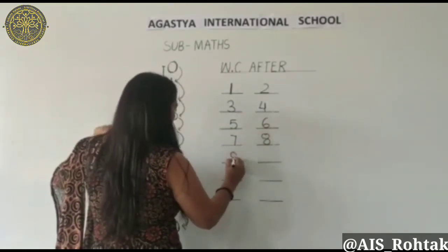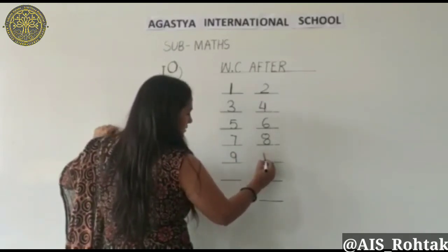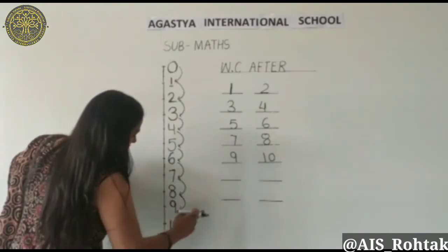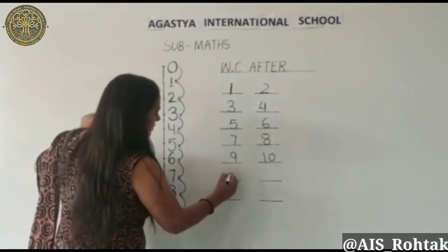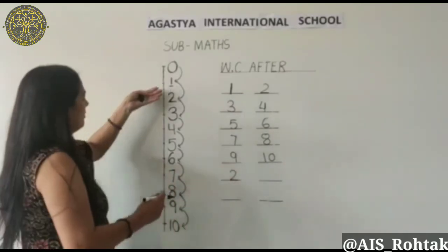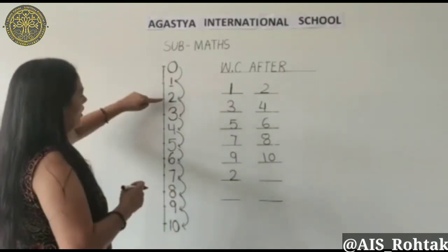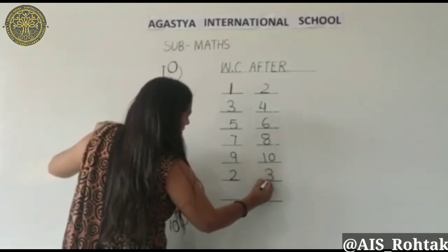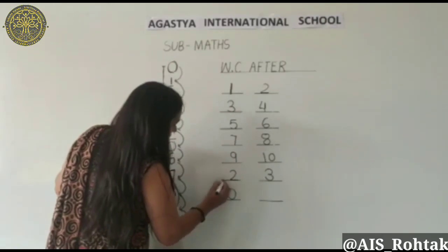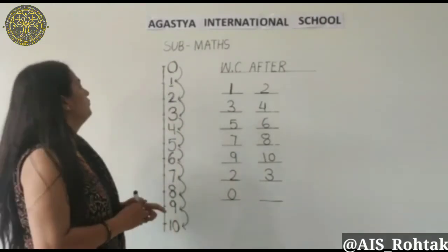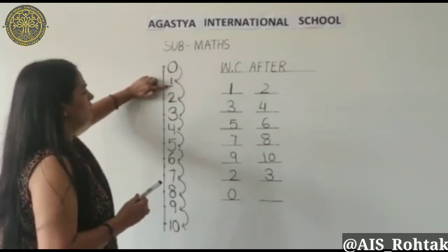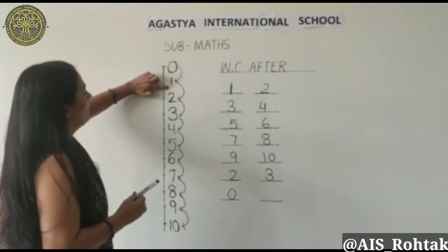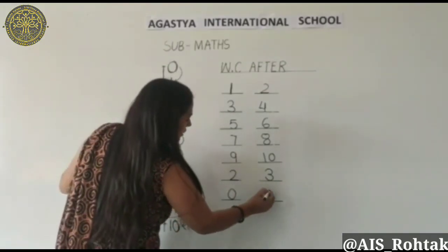And 9 — we write 10. Look at the number line: after 9 is 10. And what comes after 2? What comes after 2? After 2 — it's 3. Write here 3. And tell me, what comes after 0? What comes after 0? 0, and what is this? This is number 1. Kya hai 0 ke baad? 1. After 0 we write 1.